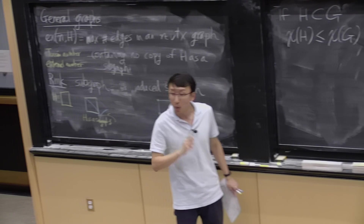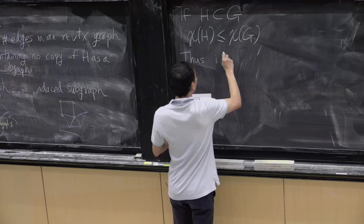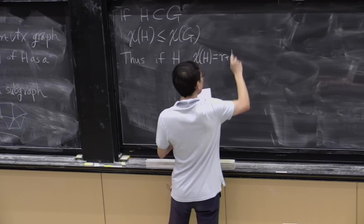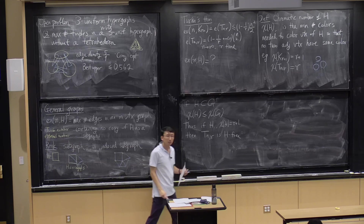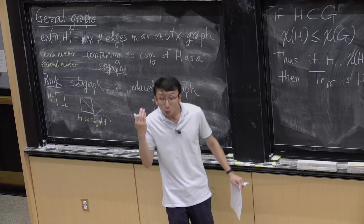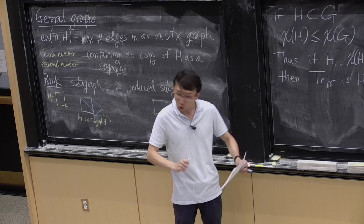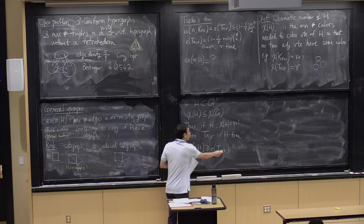If H is a subgraph of G, then χ(H) ≤ χ(G) — because any proper coloring of G automatically gives a proper coloring of H. So if H has chromatic number r+1, then the Turán graph T(n,r) is always H-free: H cannot be embedded into a complete r-partite graph. The Turán graph is therefore an example of an H-free graph with lots of edges, giving a lower bound: Ex(n, H) ≥ edges in T(n, χ(H)-1).